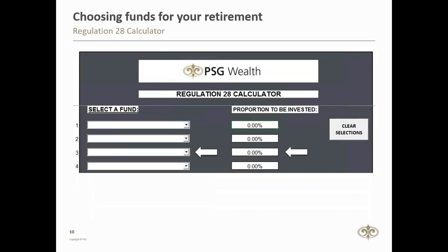Another tool available on our website is the Regulation 28 Calculator. This tool is in an Excel format — there's an input sheet and a results sheet. You will use this tool when you're looking at investing in multiple funds within your retirement annuity or preservation fund. If you want to diversify your portfolio and invest in two, three or even more unit trust funds, you'll use this tool. There's a drop-down list on the left-hand side where you select the fund, then complete the corresponding percentage allocation you want to allocate to that fund, and do so until your allocation sums up to 100%. You can select any and as many available unit trust funds as you like, as long as the overall asset allocation is compliant with the Regulation 28 limits.